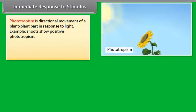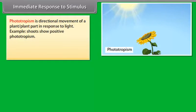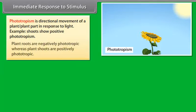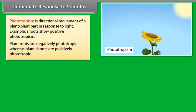Phototropism is the directional movement of a plant or plant part in response to light. For example, shoots show positive phototropism. Plant roots are negatively phototropic whereas plant shoots are positively phototropic.